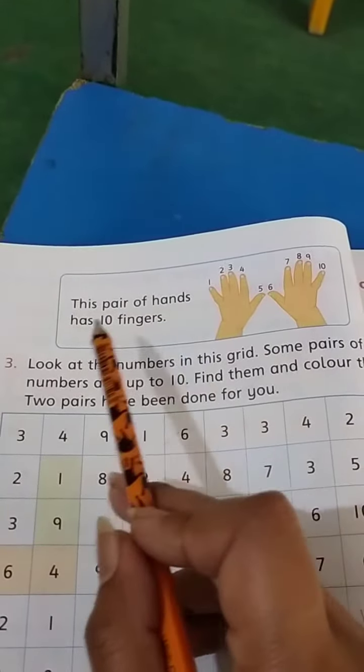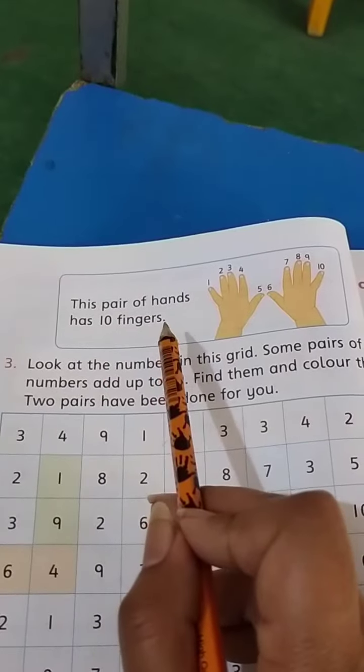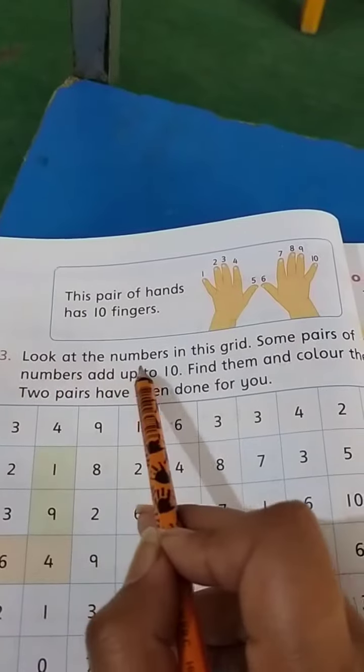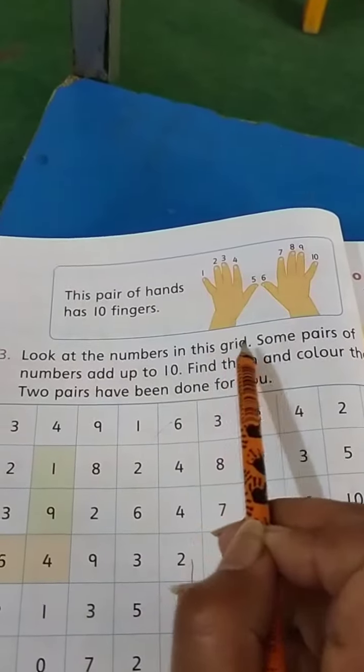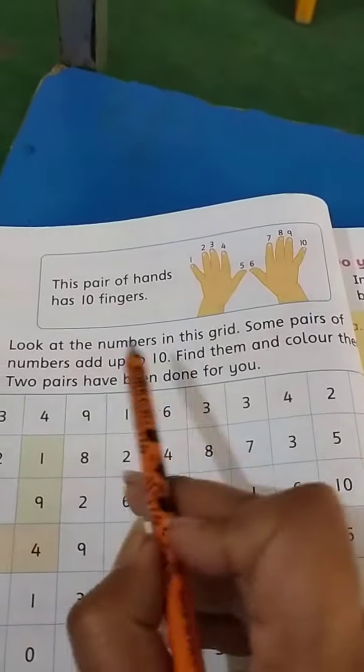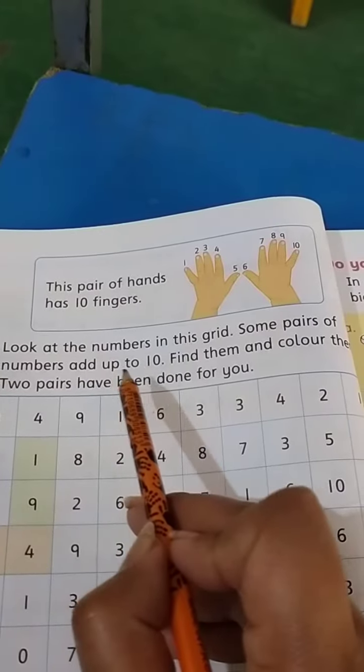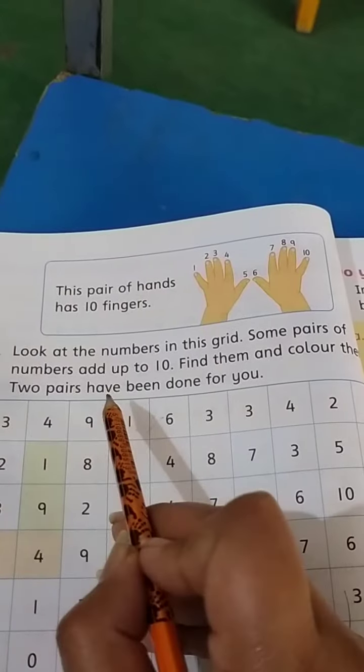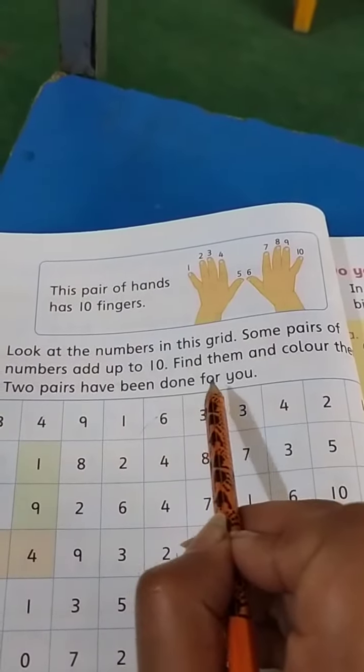This pair of hands has 10 fingers. So we have to find out the 10. Digit 10. Look at the numbers in this grid. Some pair of numbers add up to 10. Find them and color these. Two pairs have been done for you.